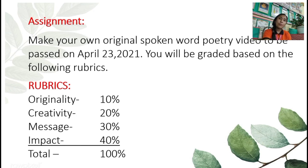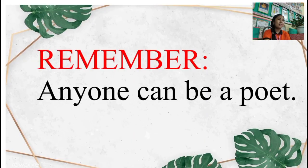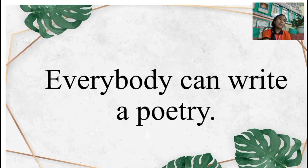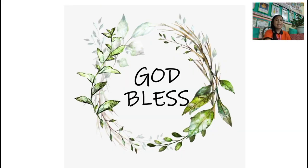For your assignment class, make your own original spoken word poetry video to be passed on April 23, 2021. You will be graded based on the following rubrics — originality: 10%, creativity: 20%, message: 30%, impact: 40%, with a total of 100%. I know you can do that class. Always remember: anyone can be a poet, and everybody can write poetry. God bless.